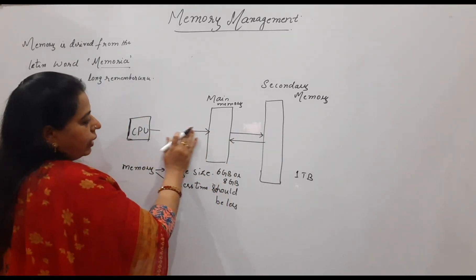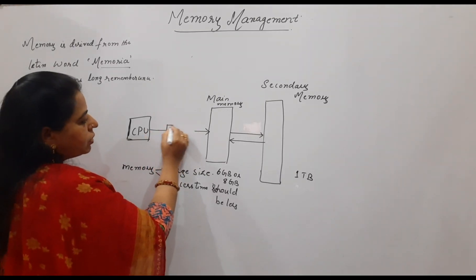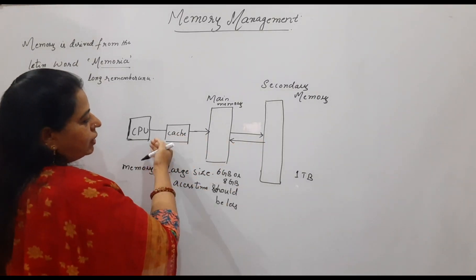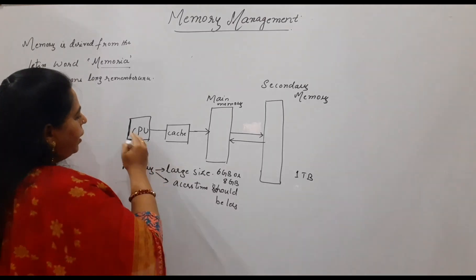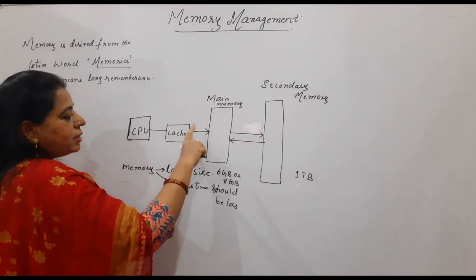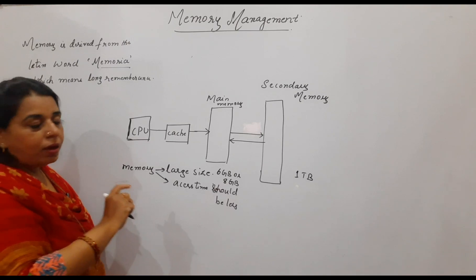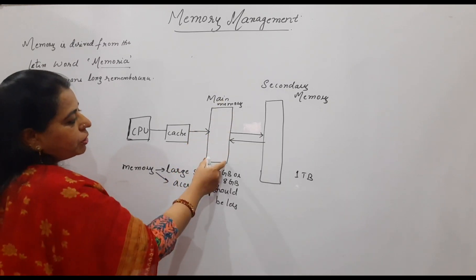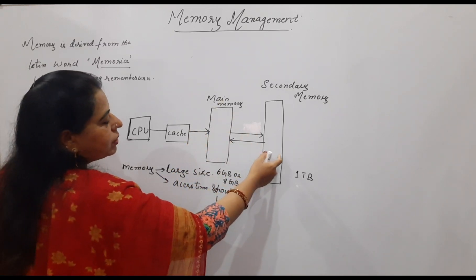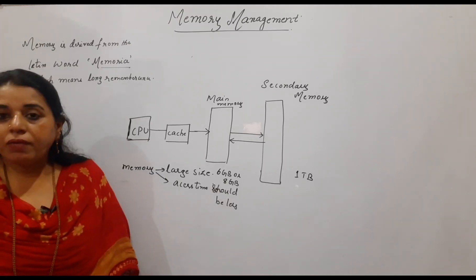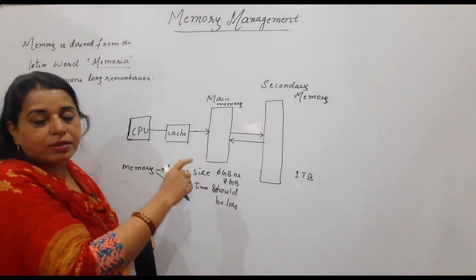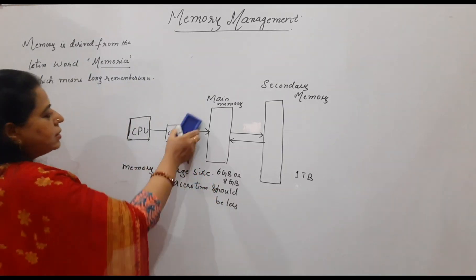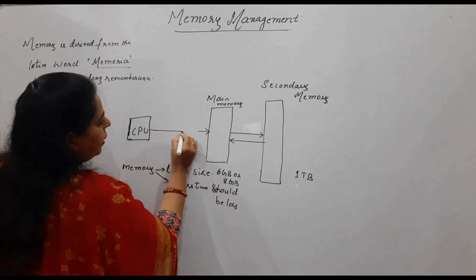There are other levels also in between the CPU and the main memory which are quite faster, and that is called the cache. These are the different levels of memory in a system. The smaller the size of the memory, the faster is the access. At present, in this syllabus, we will not include the cache because it is mainly covered in computer architecture. We will focus on the main memory and the secondary memory.